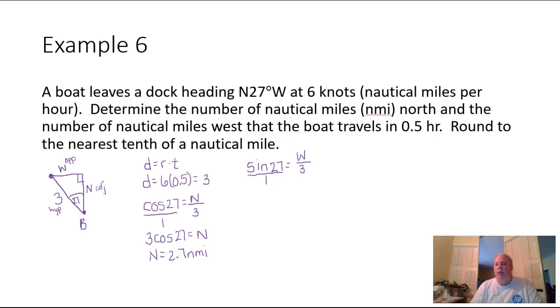If I put all this over 1, I can cross multiply. This is going to give me 3 times the sine of 27 degrees, and that's going to be equal to 1 times W. And then when we put that into the calculator, that is going to give me 1.4 nautical miles.